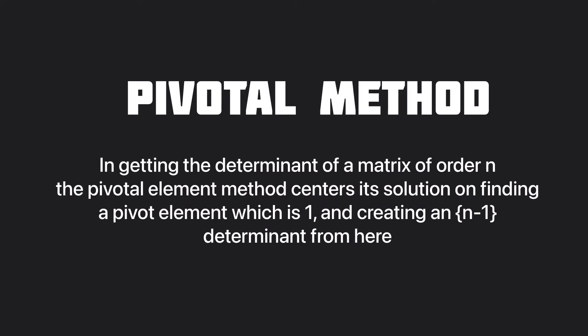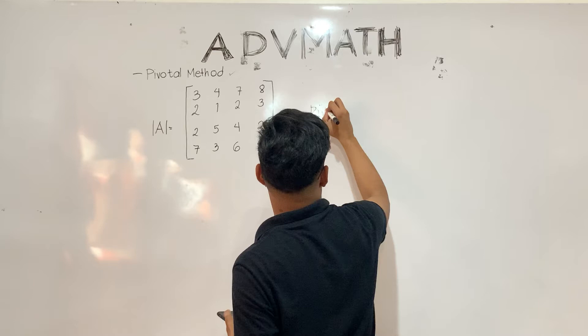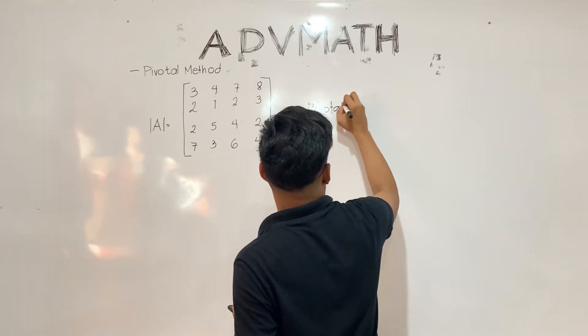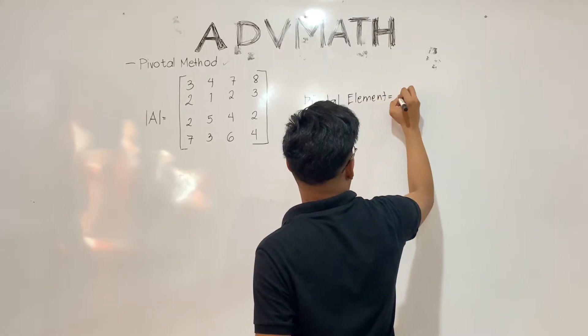In getting the determinant of a matrix of order n, the pivotal element method centers its solution on finding a pivot element which is 1, and creating an n minus 1 determinant. If the given determinant of order n has an element equal to 1, use this as the pivotal element. If no unity element is present, choose any convenient element and make it equal to 1 by factoring out or by any other method.